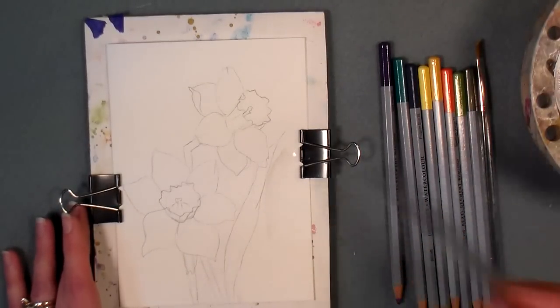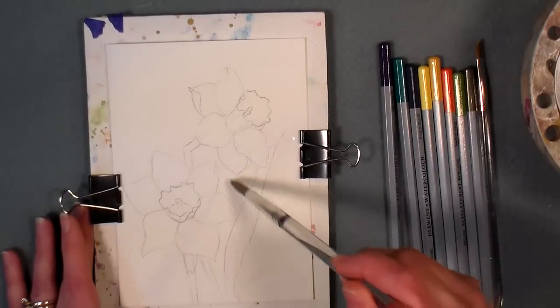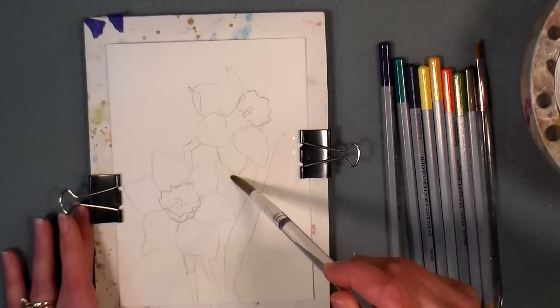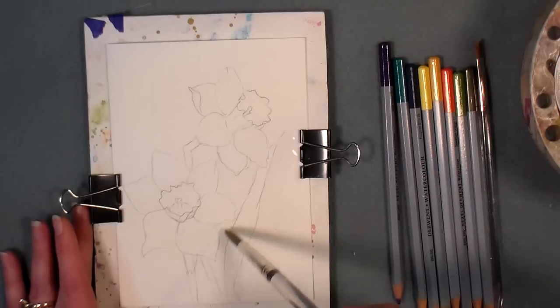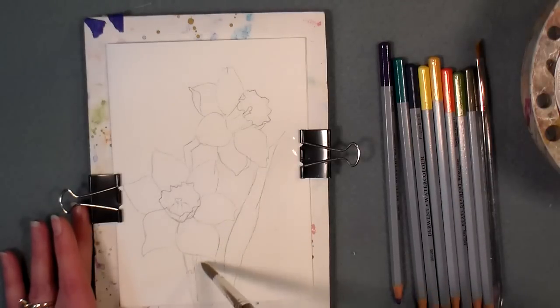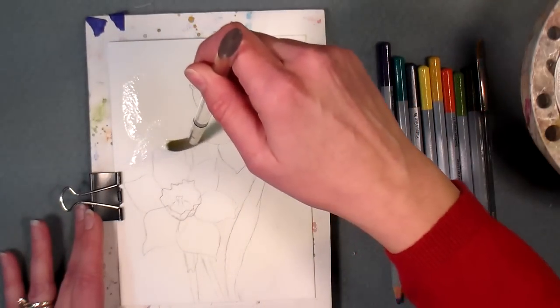So what I'm going to do is simply wet everything that is not the flower or that blade of grass there, those bulbs have those really thick leaves, so I'm here just wetting the background.